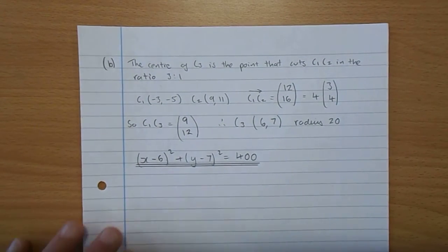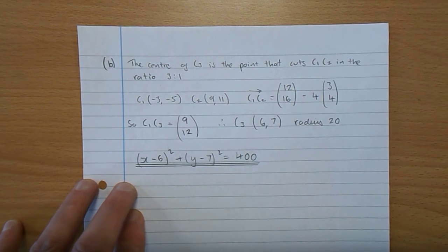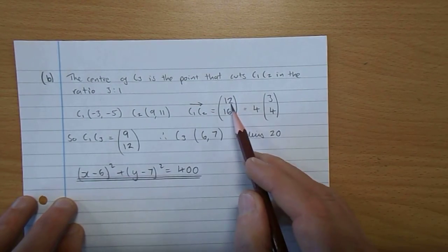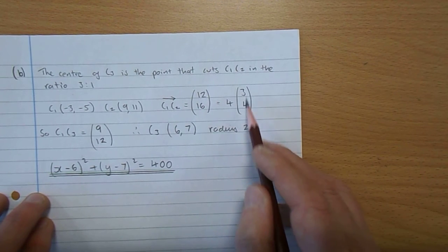Okay, so here we have there. So what's the vector from C1 to C2? Minus 3 to 9 is 12. Minus 5 to 11 is 16. That's 4 lots of 3, 4.